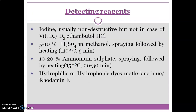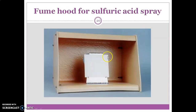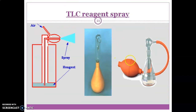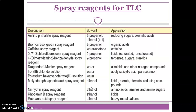We can also use different detecting reagents — for example, 5–10% H2SO4 in methanol or 10–20% ammonium sulfate depending on our experimental needs. We keep our TLC plate in the fume hood and with the help of a spray gun, we spray the spraying reagent on the TLC plate. Some spray reagents used in TLC: if our sample is an alkaloid, we use Dragendorff reagent; if our sample is reducing sugar, we use aniline phthalate; if our sample is an amino acid, we use ninhydrin spray reagent.